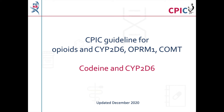This is a summary of the CPIC guideline for opioids and variation in the genes CYP2D6, OPRM1, and COMT. This video will specifically discuss the recommendations for codeine and CYP2D6. Videos discussing the recommendations for hydrocodone and tramadol can be found on the PharmGKB website and on the PharmGKB YouTube channel. This guideline was last updated in December 2020.